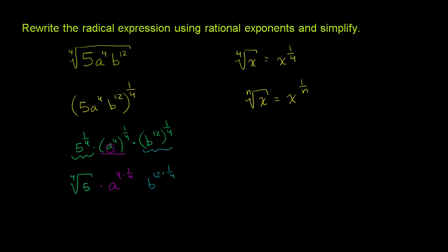And so all of this simplifies to, and I'll change the order here, so you have the 4th root of 5, and then you have a to the 4th times 1/4th power. So that's just, this simplifies to a to the 1st power, which is really just the same thing as a. So that's just a.